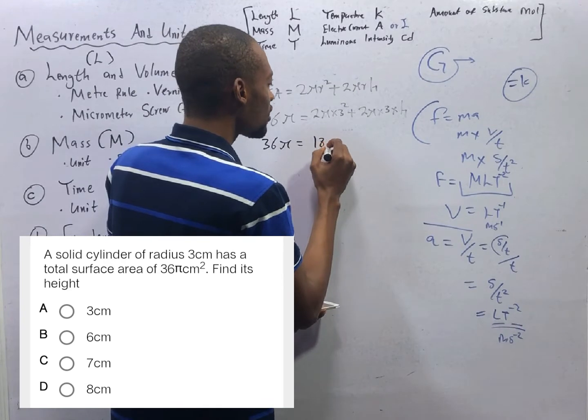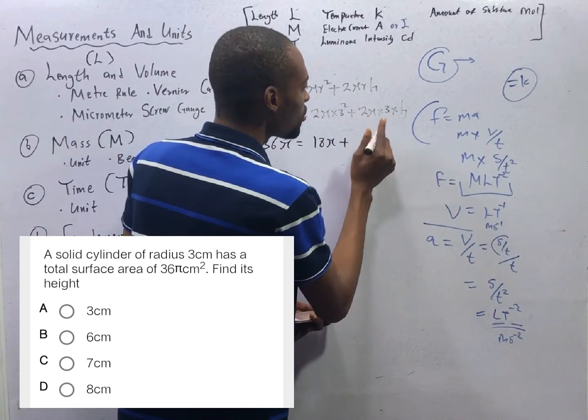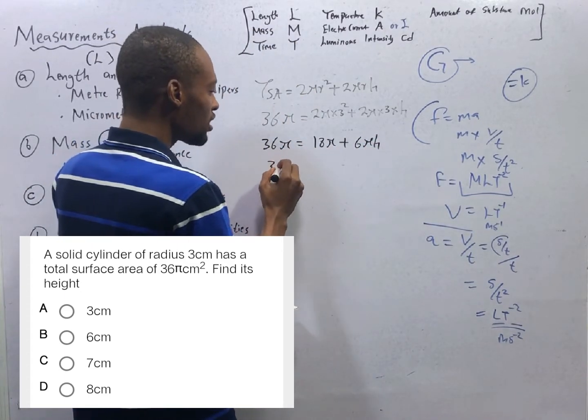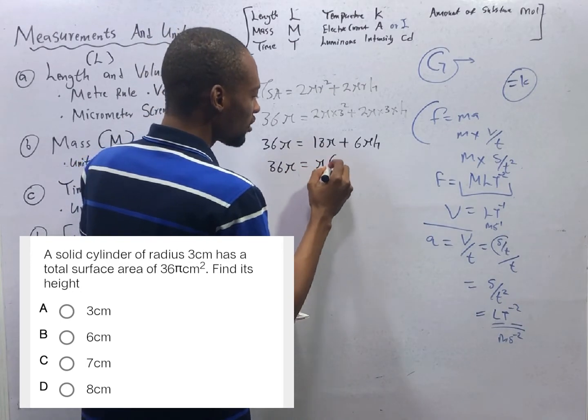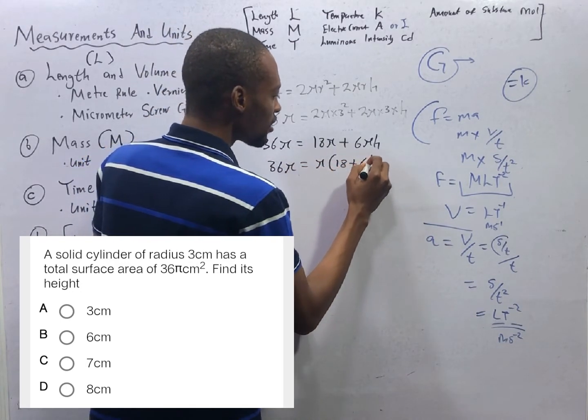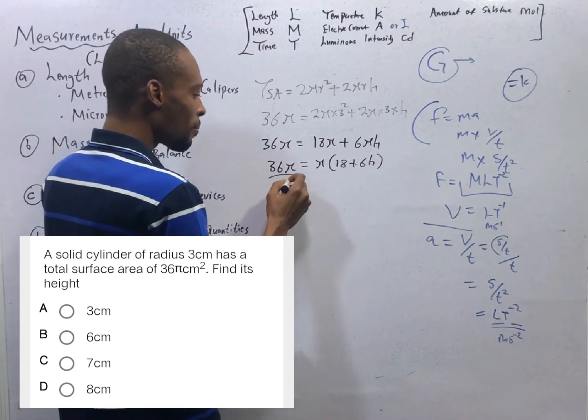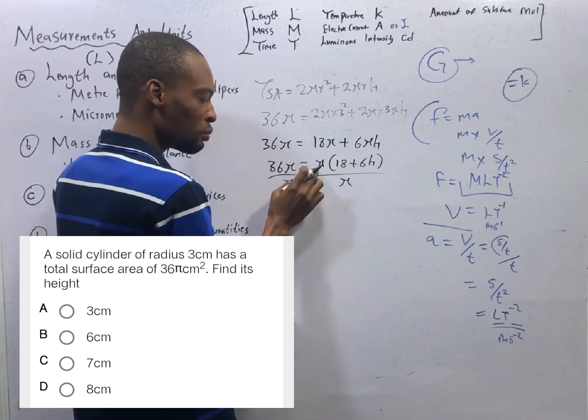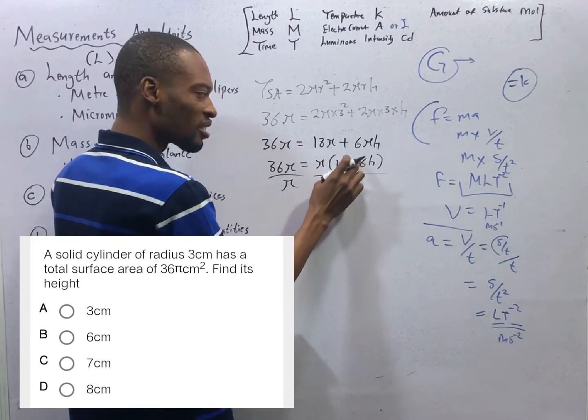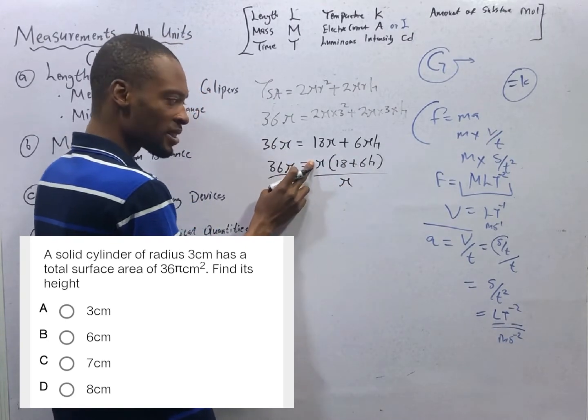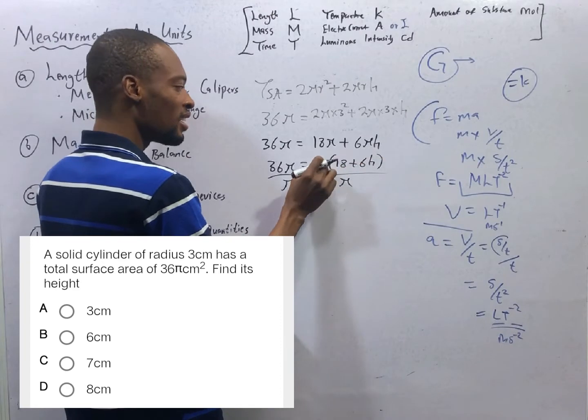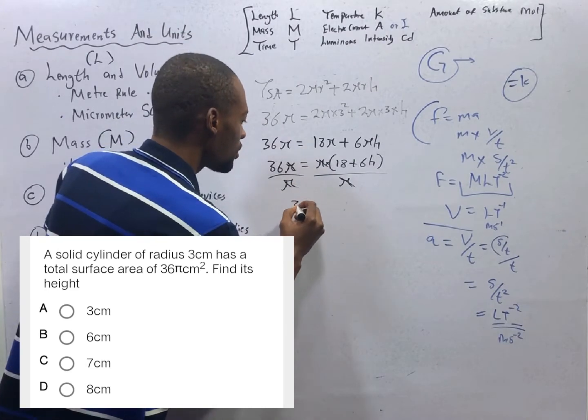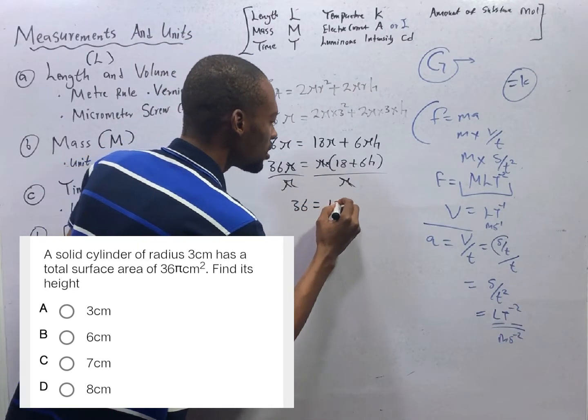Yes. So this is 18 pi plus 3 times 2, 6. 6 pi h. We can bring out pi to have 36 pi. This equals pi times 18 plus 6 h. If we divide here by pi and we divide everything here by pi. What is holding this and everything here is multiplication. So pi cannot cancel anything inside here. But it can cancel anything outside. Because everything here is 1. Bracket. Here is 1. And this is times. This cancels this. This cancels this.